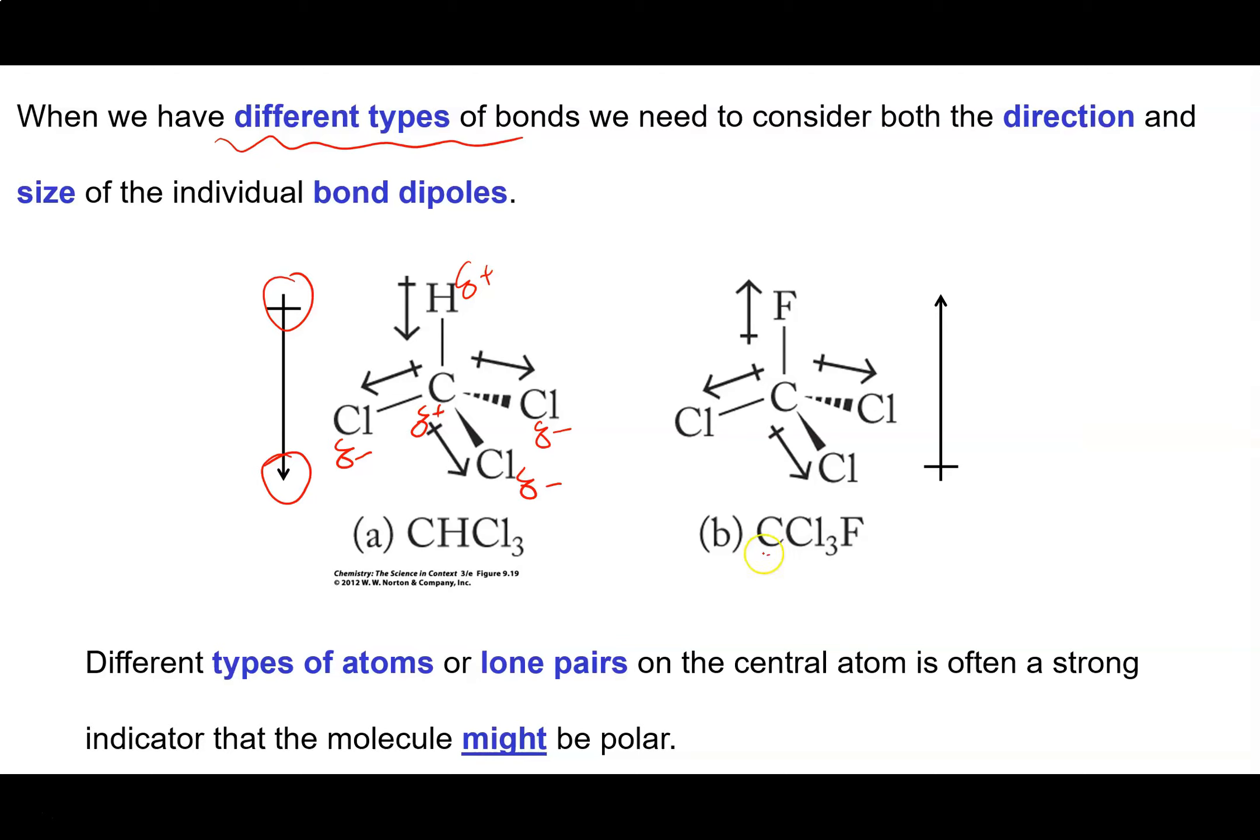Now, when you get something like this guy, carbon trichlorofluoride, it's a little more complicated because everything is pulling away from the carbon. But what's going to win out? Is it going to be this really super electronegative fluorine that's pulling up? Or is it going to be these three less electronegative chlorines that are pulling down? So in this case, you could justify drawing the arrow either way. We'd really have to do some fairly complicated math to figure out what direction the dipole was. But what we do know is that the molecule will be polar.